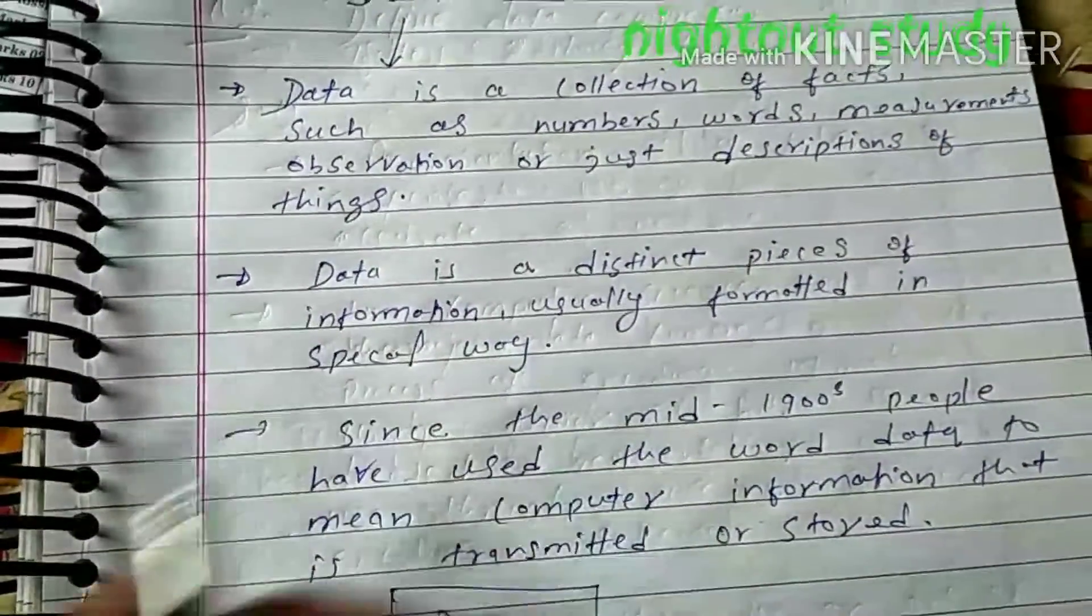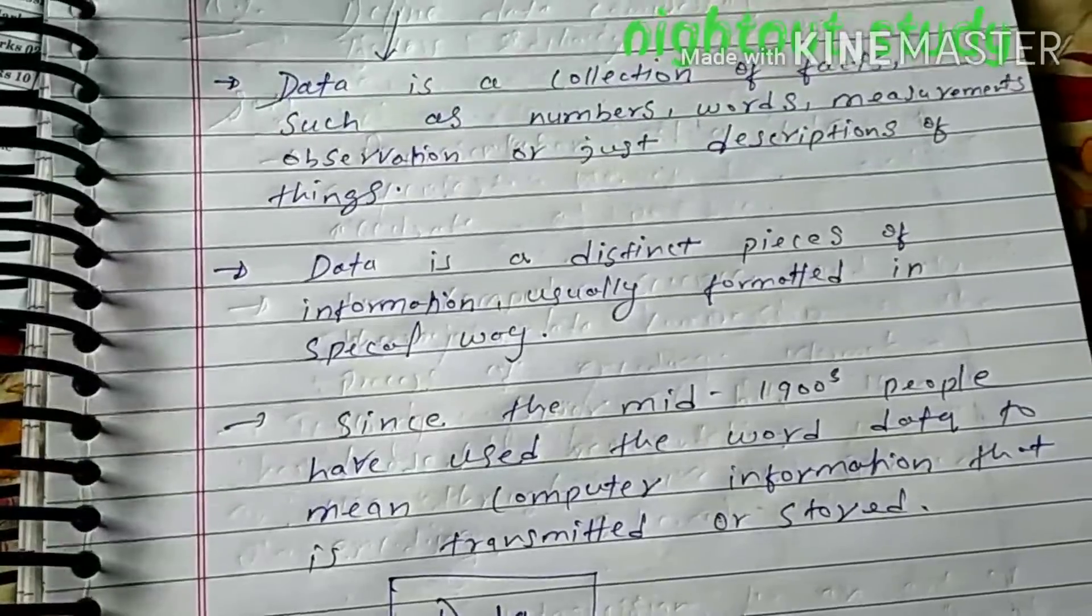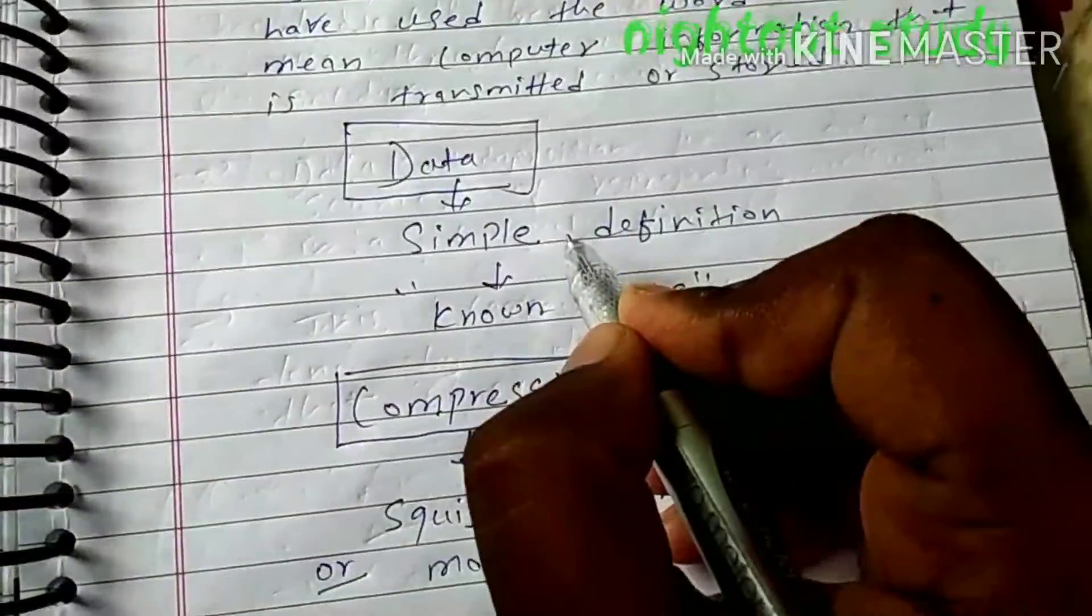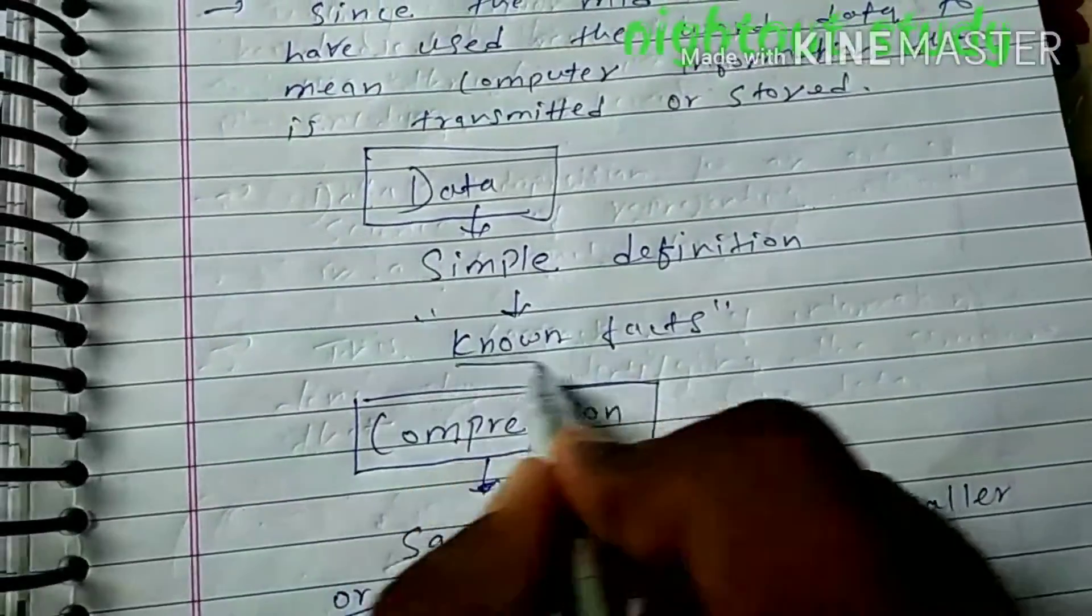Data is a distinct piece of information, usually formatted in a special way. We can say that data, in simple words, is known as known facts.